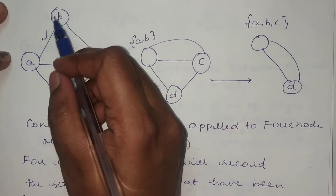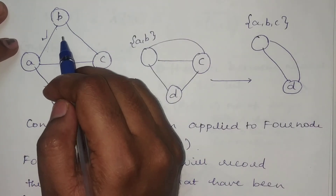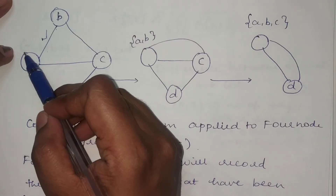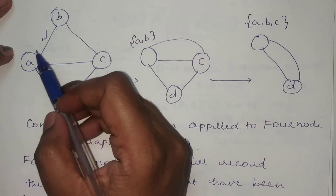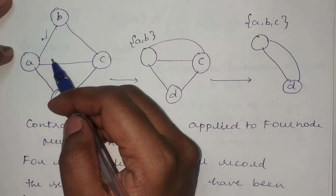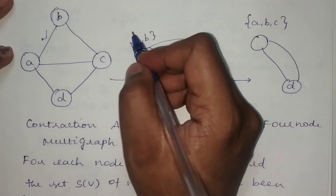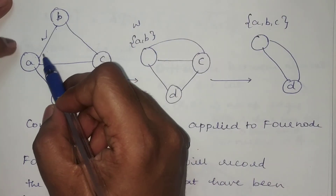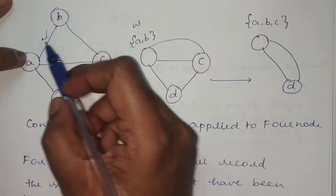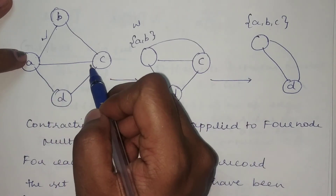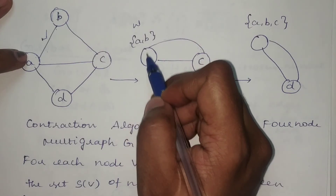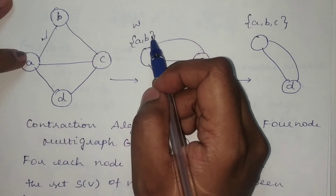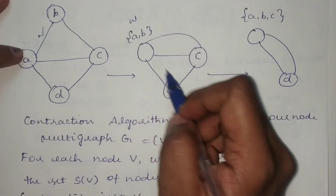The first step is to randomly select any one edge from the graph. Suppose we select edge (a, b). After selecting the edge randomly, we perform contraction — we merge these two nodes into a single node, which we represent as w. The merged node w = {a, b} holds a set of vertices, not a single vertex. The edge between a and b is deleted, and remaining edges from a and b to other nodes (like c) are retained.